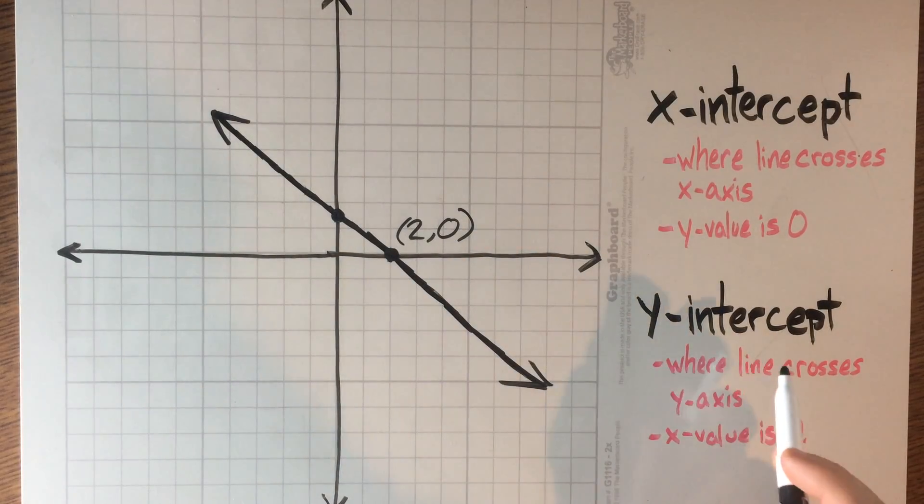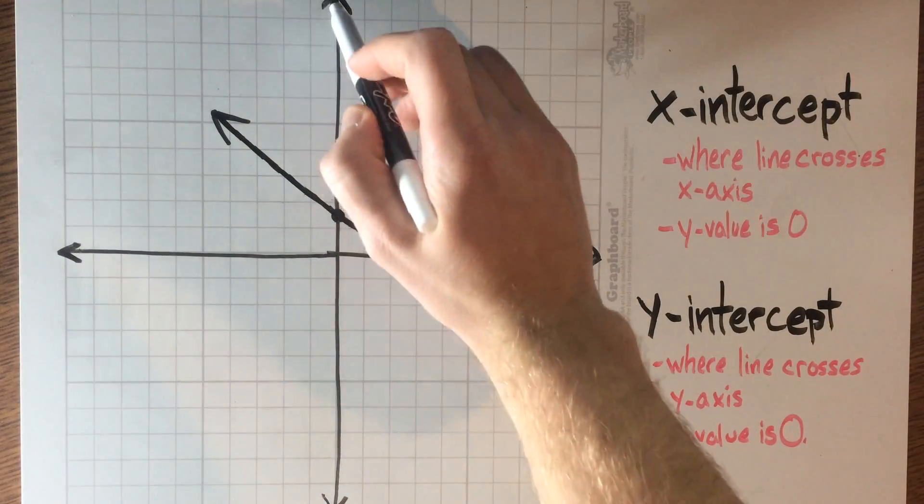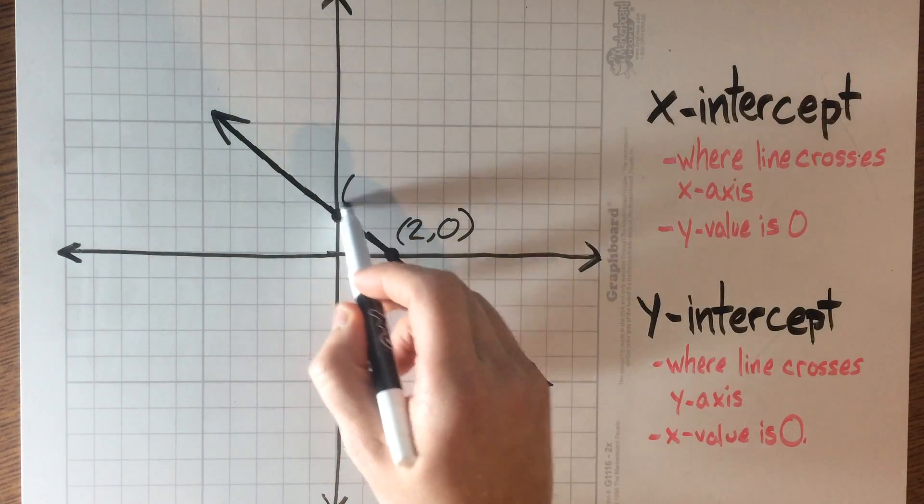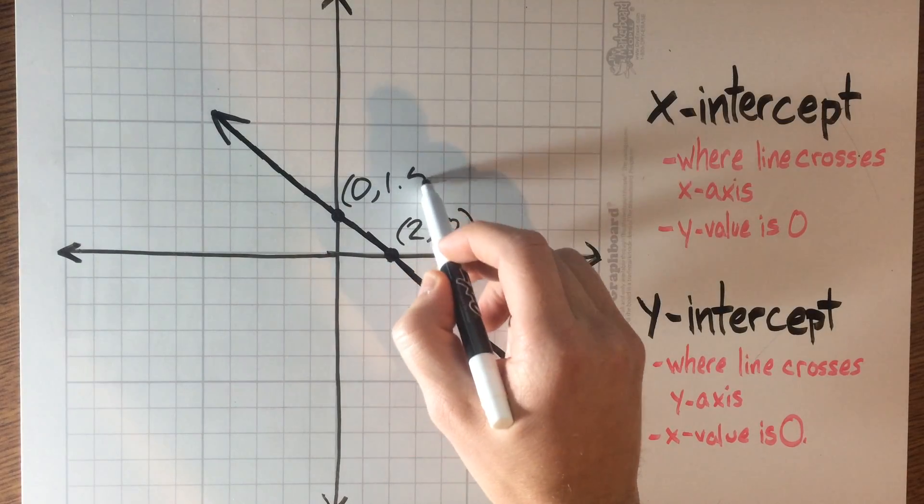For the y-intercept, it's where the line crosses the y-axis. So that would be this axis here, and it crosses right here at 0, 1.5.